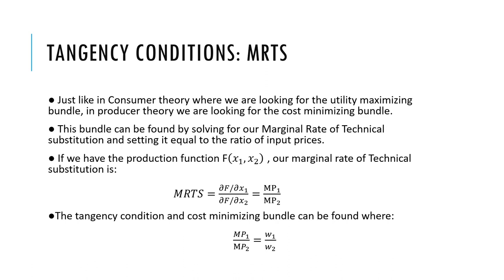Given a production function f(X1, X2), the marginal rate of technical substitution equals the derivative of our production function with respect to input one, all over the derivative with respect to X2 — that is, the marginal product of input one over the marginal product of input two. The tangency condition in the cost-minimizing model is found where MP1 over MP2 equals the price of input one over the price of input two.